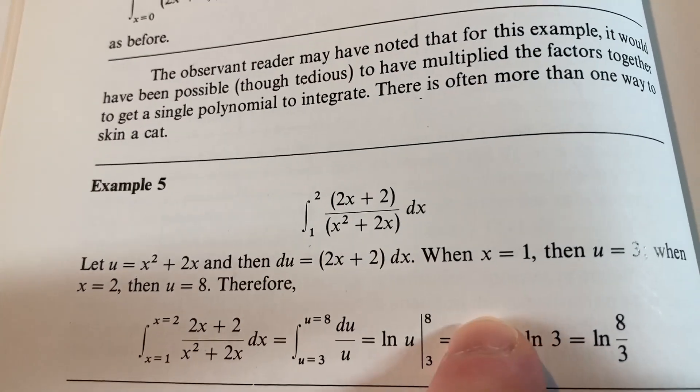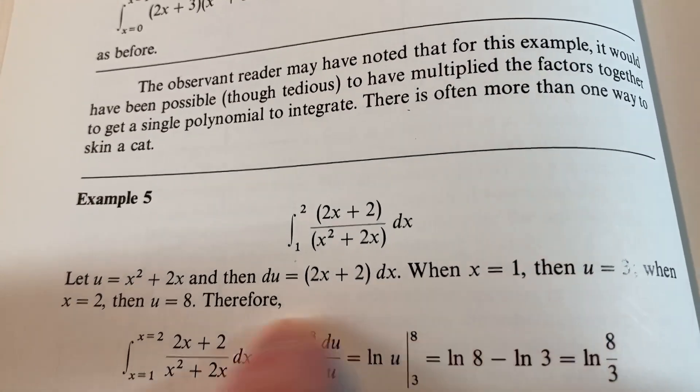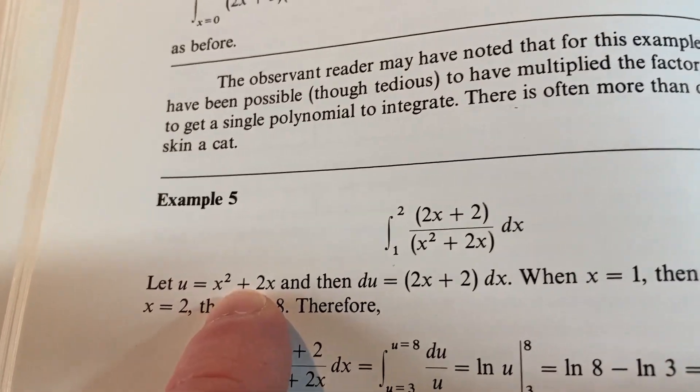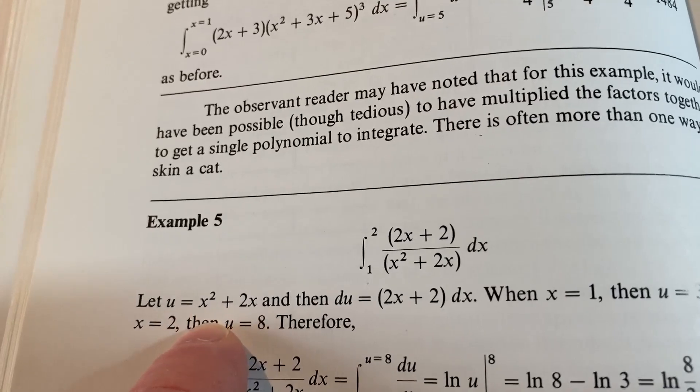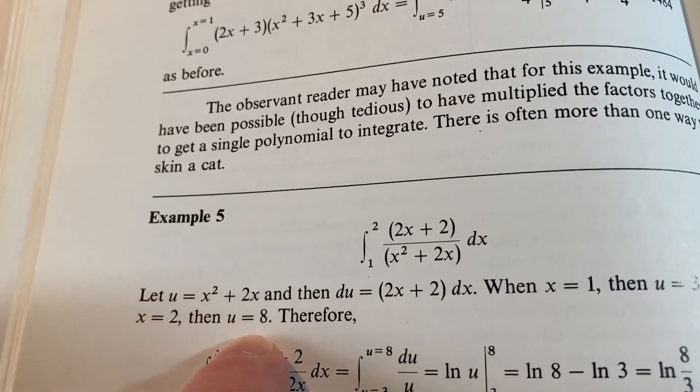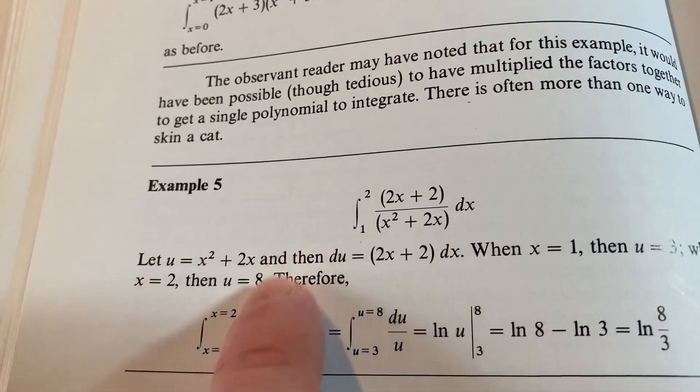And then because it's a definite integral, and you're making a u substitution, you're supposed to change the limits of integration. So it says when x equals 1, so you plug it in here, so you get 1 plus 2, so u is 3. When x is 2, so you plug it in here, so you get 4 plus 4, so u is 8.